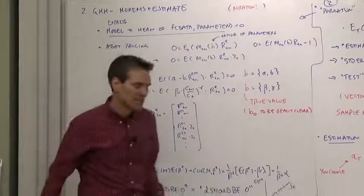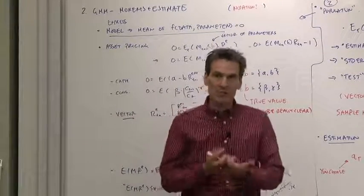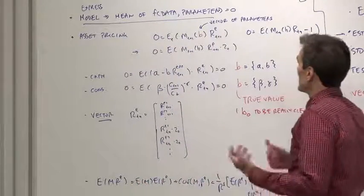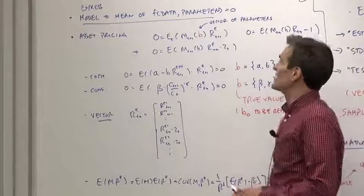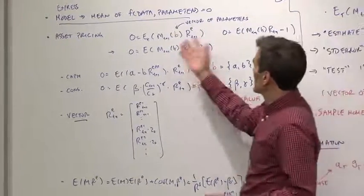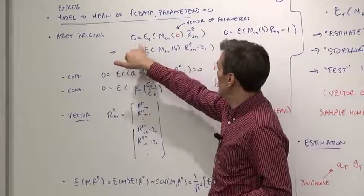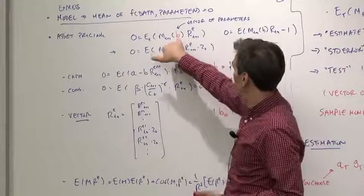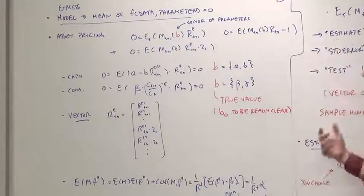The notation here is in red so we can just map ideas into the GMM notation. First task, express your model and what your model says about the world as the mean of some function of the data and some function of unknown parameters is equal to zero. That's what we've done in asset pricing.